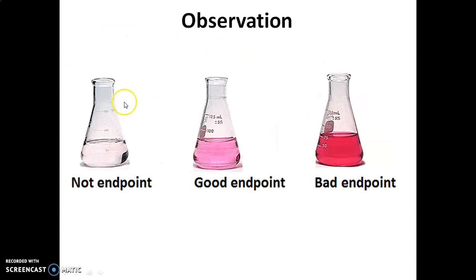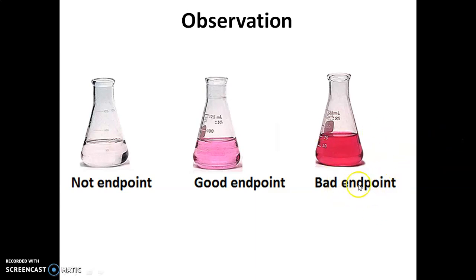In the titration of HCl versus NaOH, light pink color indicates the good end point. If we add excess NaOH to the conical flask, then you will get dark pink color, which is the bad end point. Light pink color is the good end point; dark pink color is the bad end point.